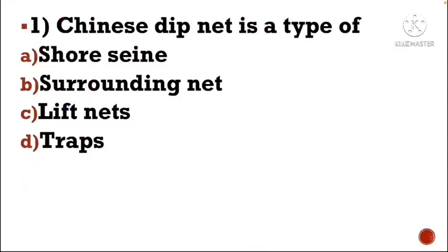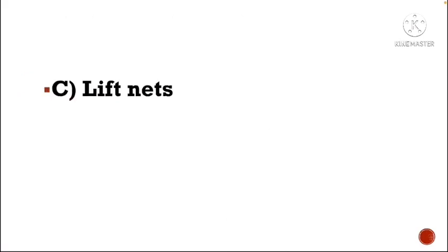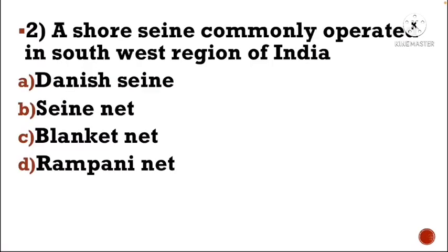First question: Chinese dip net is a type of — Option A: shore seine, Option B: surrounding net, Option C: lift nets, Option D: traps. The correct answer is Option C, lift nets.